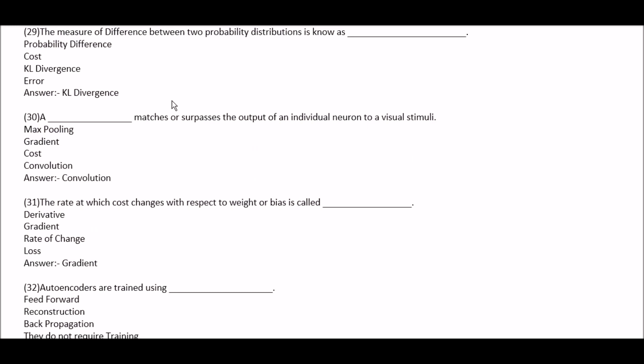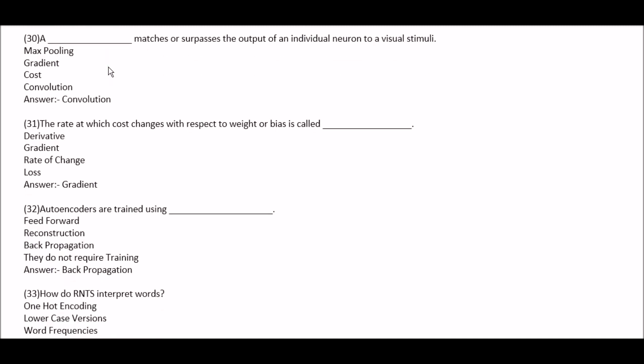The measure of difference between two probability distributions is known as — option A: probability difference. Option B: cost. Option C: KL divergence. Option D: error. Right answer is option C, KL divergence. Next question: blank space matches or surpasses the output of an individual neuron to a visual stimulus. Option A: max pooling. Option B: gradient. Option C: cost. Option D: convolution. Right answer is option D, convolution — a convolution matches or surpasses the output of an individual neuron to a visual stimulus.